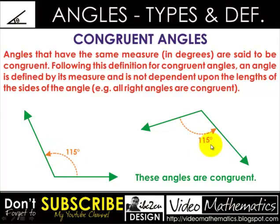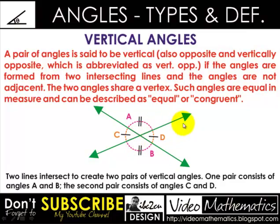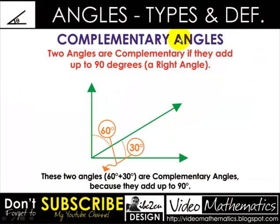The next type is vertical angles. A pair of angles is said to be vertical — also called opposite or vertically opposite — if the angles are formed from two intersecting lines and the angles are not adjacent. The two angles share a vertex, are equal in measure, and can be described as congruent. Here, the two lines intersect to create two pairs of vertical angles: pair AB and pair CD, where C always equals D and A always equals B.